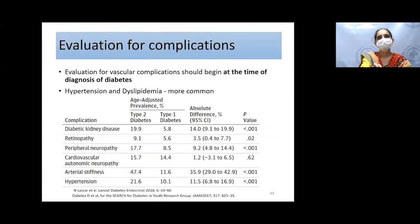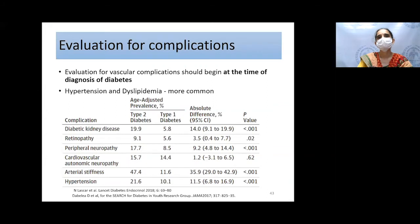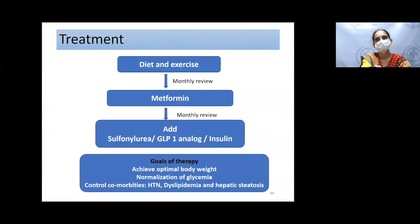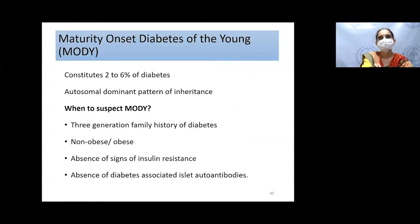Surprisingly, adolescents with type 2 diabetes had more microvascular complications and hypertension compared to those with type 1 diabetes. Treatment of type 2 diabetes: diet modification, exercise; if not controlled, add metformin; if further uncontrolled, options include sulfonylurea, GLP-1 analogue after age 10, or insulin. Goals of therapy include normalization of glucose, optimizing body weight, and controlling comorbidities such as fatty liver, hypertension, and dyslipidemia.